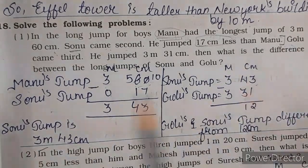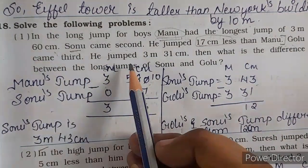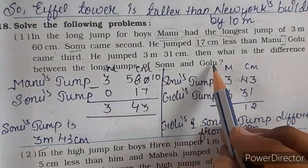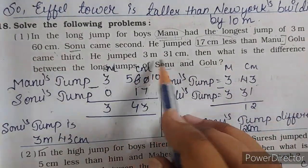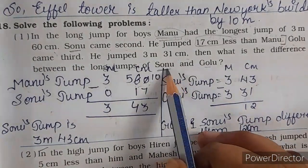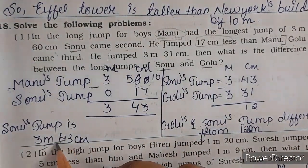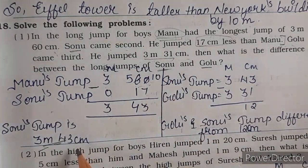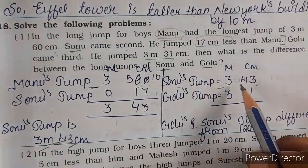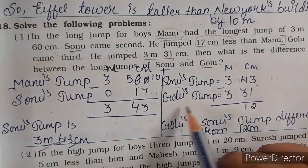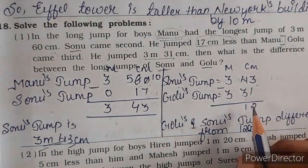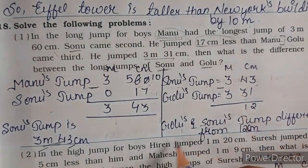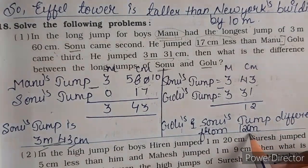Next question kya puchha hai — Golu came third, he jumped 3 meter 31 centimeter. Then what is the difference between the long jump of Sonu and Golu? Golu ne jump kiya tha 3 meter 31 centimeter. Ab aapko difference batana hai Sonu aur Golu ka. Sonu ka aapne abhi find kiya — 3 meter 43 centimeter. Golu ka already diya hua hai. Bada value Sonu ka hai — 3 meter 43 centimeter minus 3 meter 31 centimeter. Golu aur Sonu ki jump ka difference kitna hai — 12 centimeter.